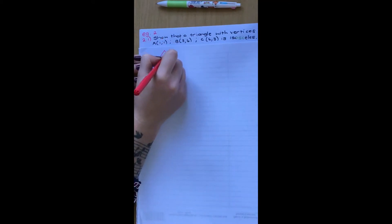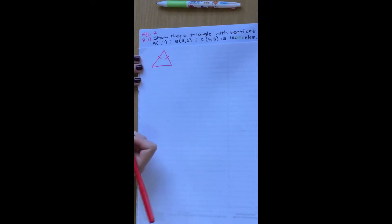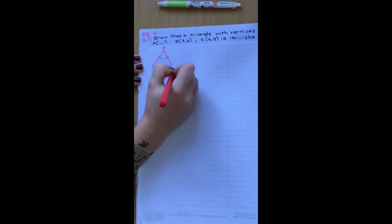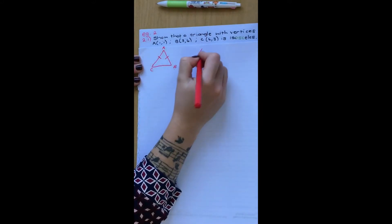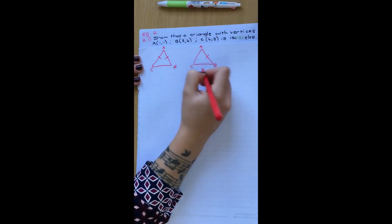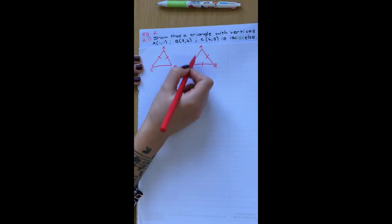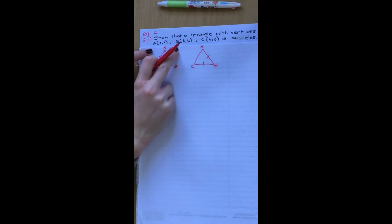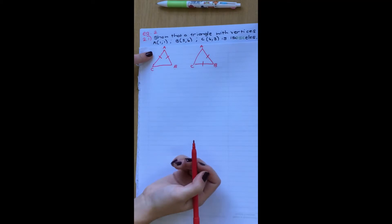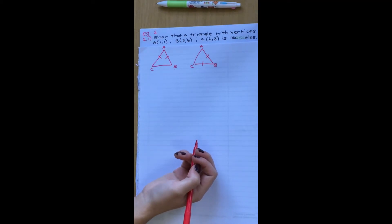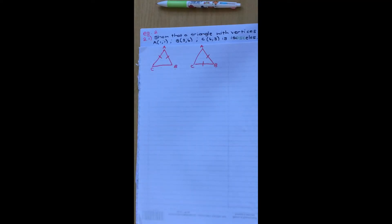Before I get started, if I think about an isosceles triangle — what does that mean? An isosceles triangle means two sides will be equal. So if this is A, B, C, then AB will equal AC. We don't know how the triangle looks because all they've given us is points. So what we're going to do is guess — we'll try find the length of AB and then try AC, and see if those two lengths are equal. If not, we must try the next combination.